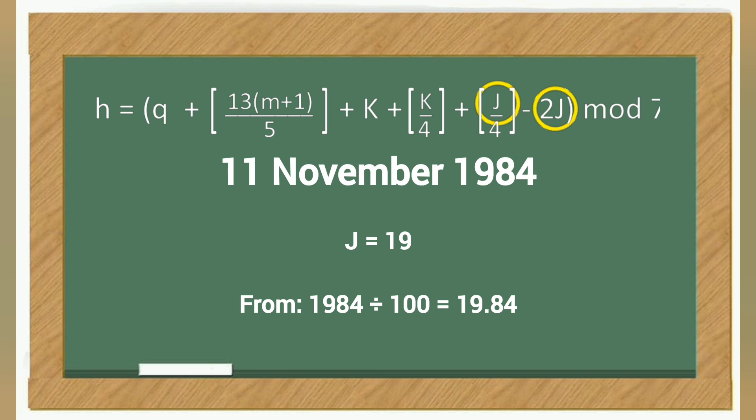The letter j stands for the zero-based century, or is just dividing the year 1984 by 100. Just get the integer part of the result and leave behind the decimal parts. You'll get the value for the letter j which is 19.